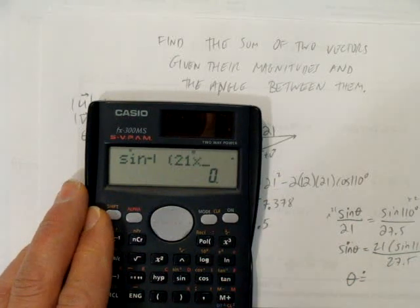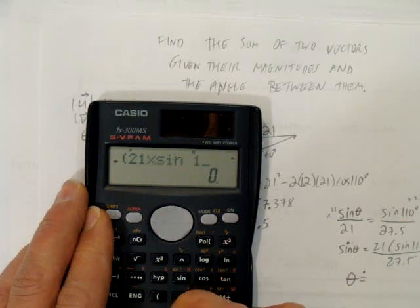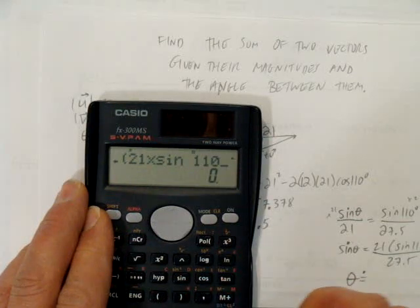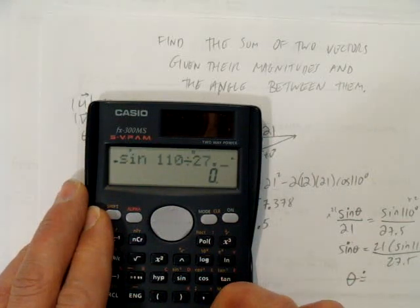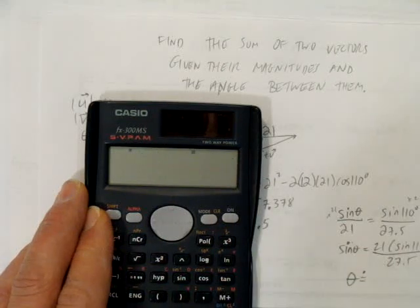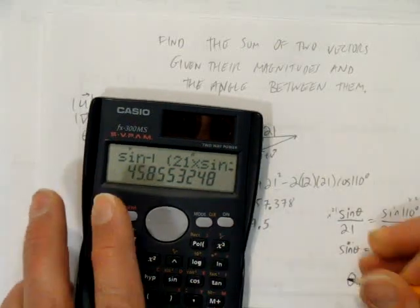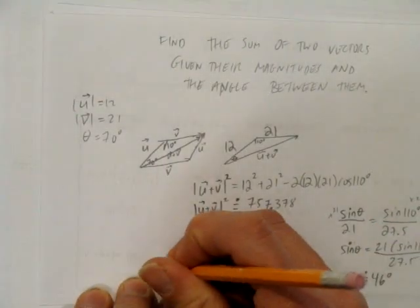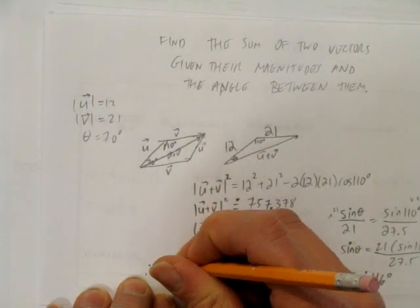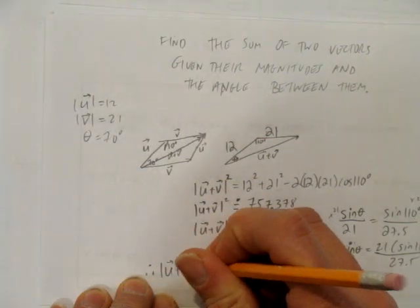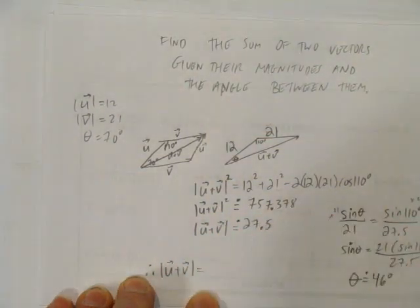21 times sine of 110, divided by 27.5. Close the bracket, so it takes the inverse sine, and I get approximately 46 degrees. So my final answer is the vector u plus v vector's magnitude is 27.5,